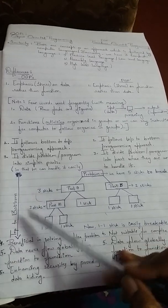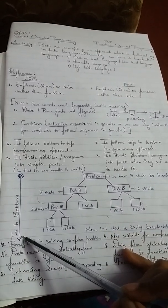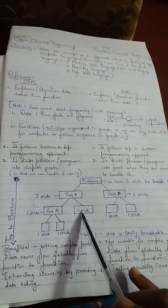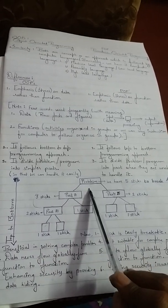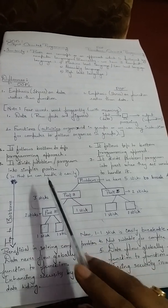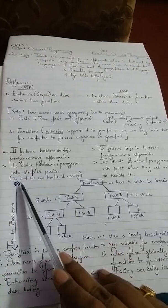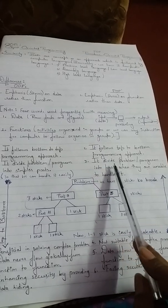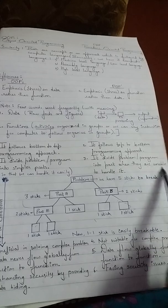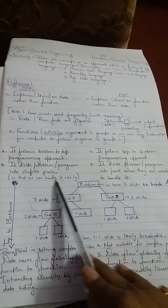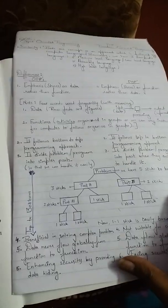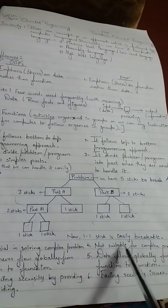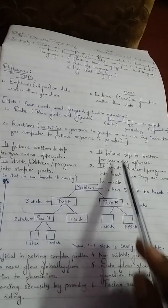So we have two approaches: bottom-to-top or top-to-bottom. Either you split a problem into parts and then solve it, or you take the problem as a whole and then split into parts. The idea is to divide a program into simpler parts so that we can handle it easily. This makes OOP beneficial and suitable for solving complex problems, while POP is not suitable for complex problems.